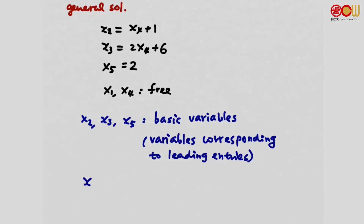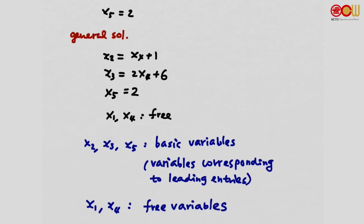The rest of the variables — x1 and x4 — are what we call free variables. When variables are not basic variables, they are free variables. A solution in this form is called a general solution.